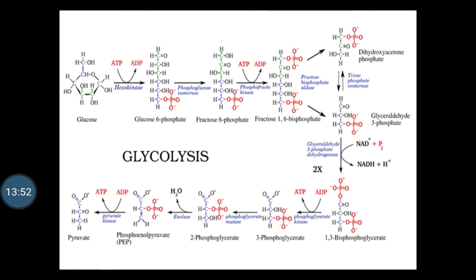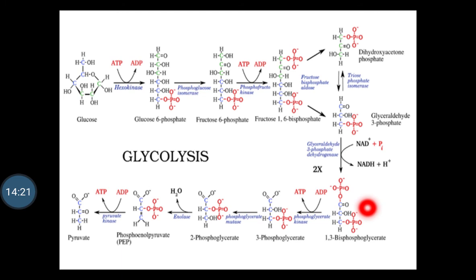Step 6 is the oxidative phosphorylation, one of the three energy-conserving steps of glycolysis. Glyceraldehyde 3-phosphate is converted into 1,3-bisphosphoglycerate. In this process, NAD is reduced to coenzyme NADH by the hydrogen ions from glyceraldehyde 3-phosphate. Since 2 moles of glyceraldehyde 3-phosphate are formed from 1 mole of glucose, 2 NADH are generated in this step.